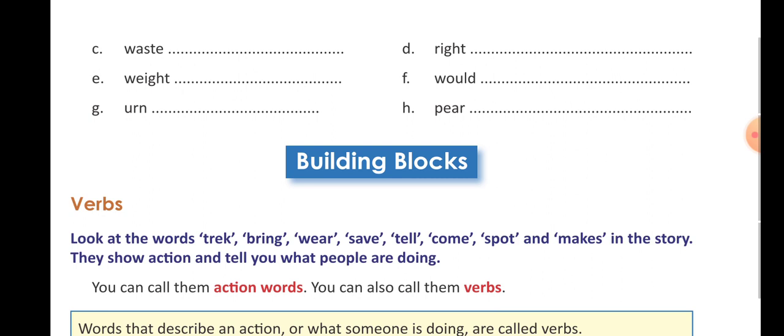D: R-I-G-H-T, 'right', means correct — and the answer is W-R-I-T-E, 'write'. E: W-E-I-G-H-T, 'weight' — in Hindi, wajan — and the answer is W-A-I-T, 'wait', meaning to wait for someone — kisi ka intazar. F: W-O-U-L-D, 'would' — and the answer is W-O-O-D, 'wood'.